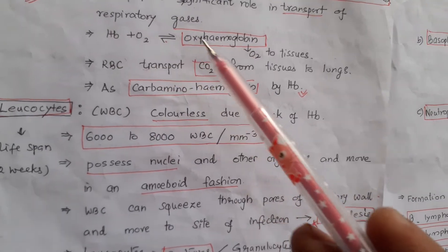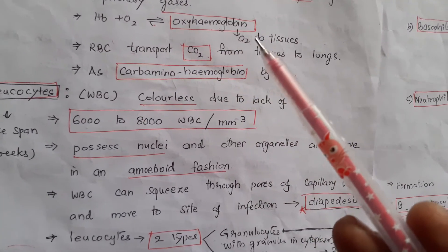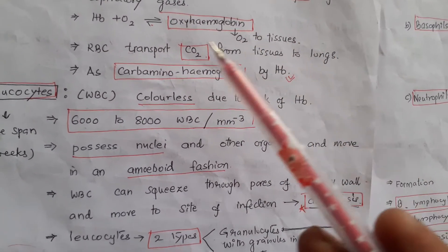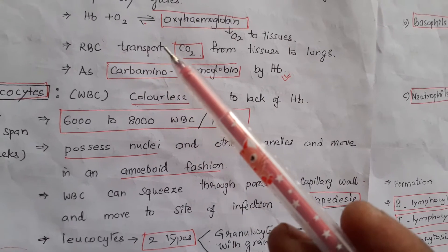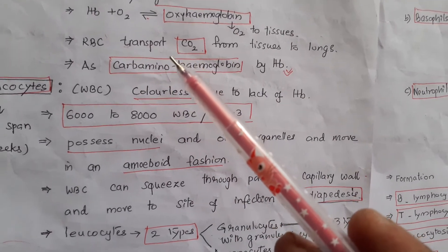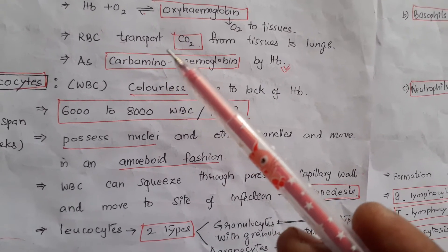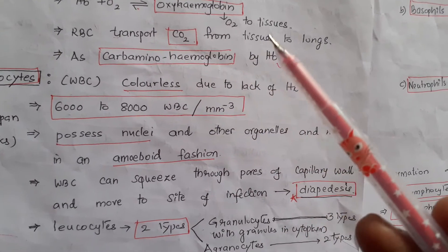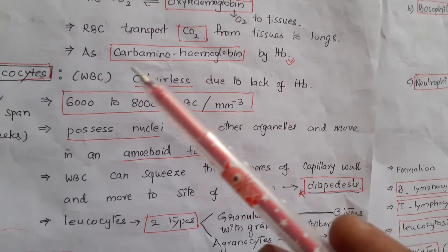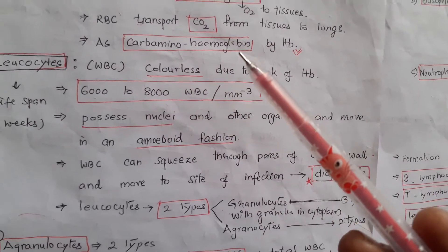Hemoglobin plays a significant role in the transport of respiratory gases. Oxyhemoglobin is formed when hemoglobin combines with oxygen, and it delivers oxygen to tissues. RBCs also transport CO2 from the tissues to the lungs as carbaminohemoglobin.